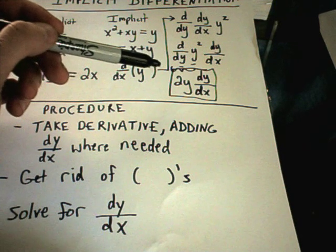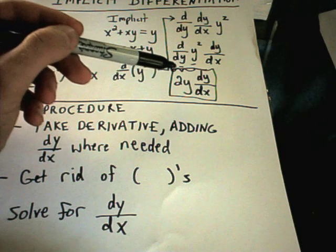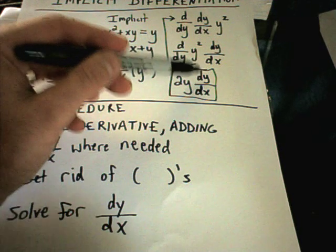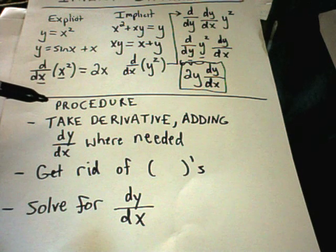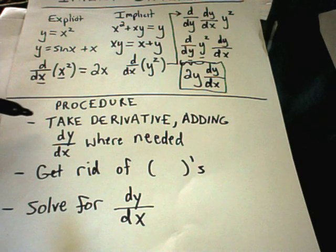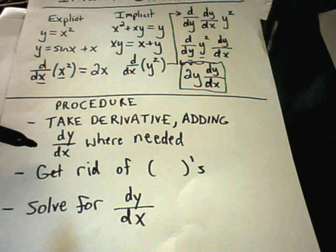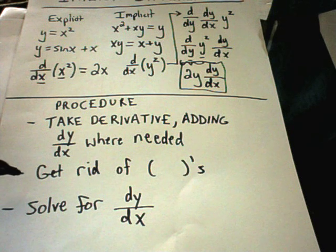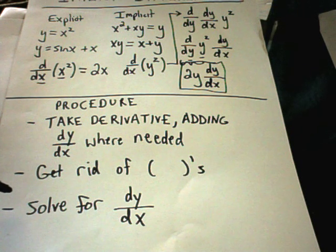Basically take the derivative like normal. If you're taking the derivative of something involving a y or a z, as long as you're taking the derivative with respect to x, you'll tack on a dy/dx or dz/dx. The procedure for doing implicit differentiation: basically just take the derivative like normal, adding dy/dx's where needed. You'll only need those when you're taking the derivative of something not involving x. Next, just get rid of any parentheses. And lastly, just solve that equation for dy/dx.